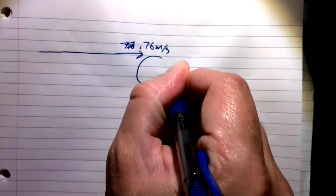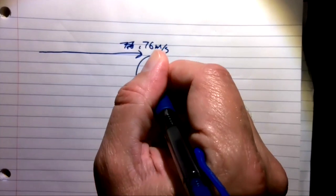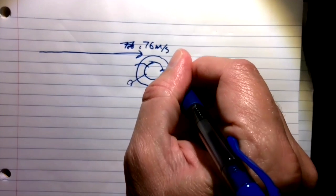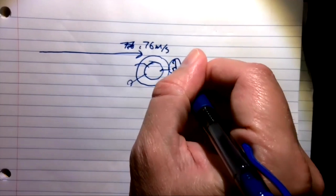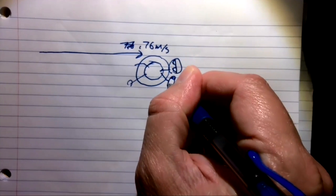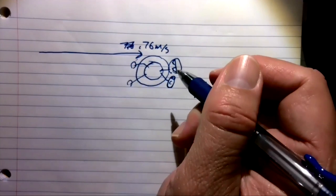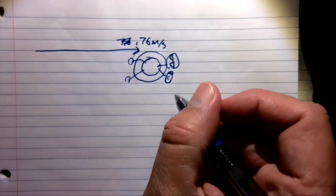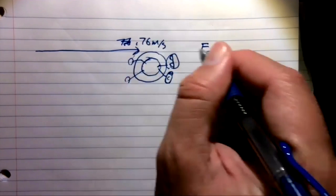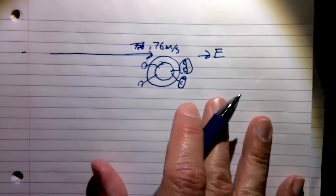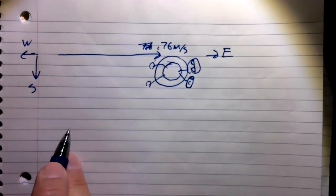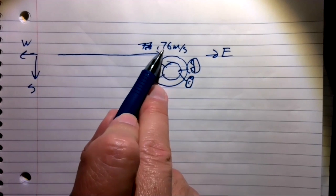That means if I was in an inner tube, floating here, I would just be carried along. The river is flowing at 0.76 meters per second to the east. This way is east, so that would mean over here is to the west, and down is south — pretty standard. So here is our velocity of the river.